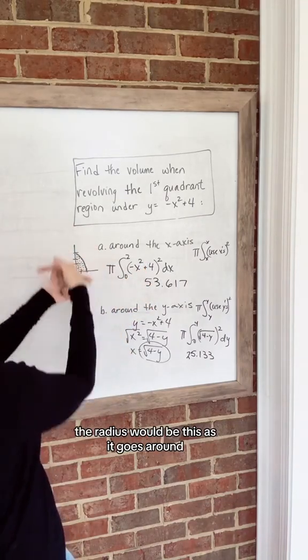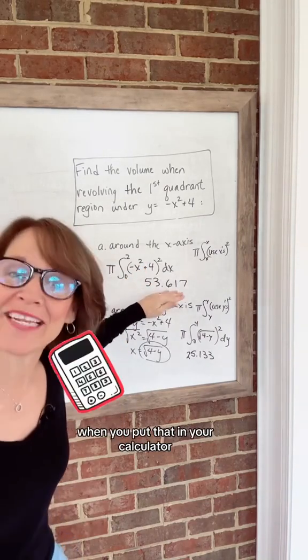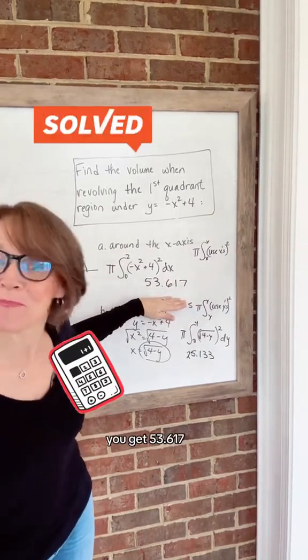The radius would be this as it goes around. When you put that in your calculator, you get 53.617.